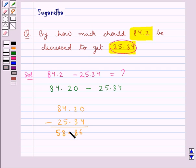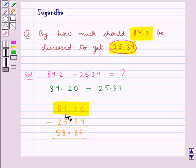That is we put the decimal point here. So 58.86 would be the answer when we subtract both the decimal numbers.